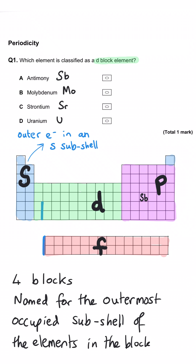Antimony is in group 5 so it's P block. Molybdenum is right there in the middle in the D block, so that's going to be the correct answer. Strontium is there in group 2 so S block. And uranium is right down there in the F block. So B is the correct answer.